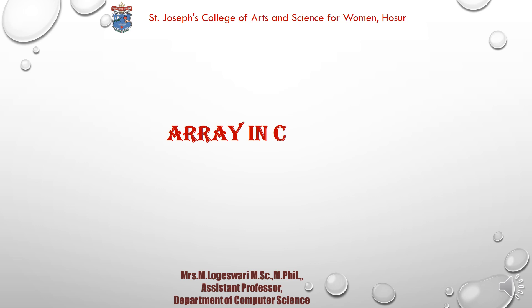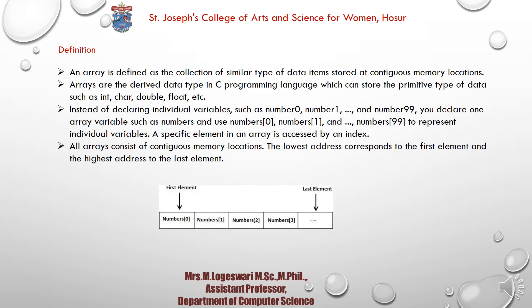Today we will learn about arrays in C. An array is a collection of similar data items stored at contiguous memory locations. Arrays are derived data types such as integer, float, and double. Instead of declaring individual variables like number0, number1, and so on, you can declare an array variable, where specific elements are accessed by an index. The lowest address is considered the first element, and the highest address is the last element.